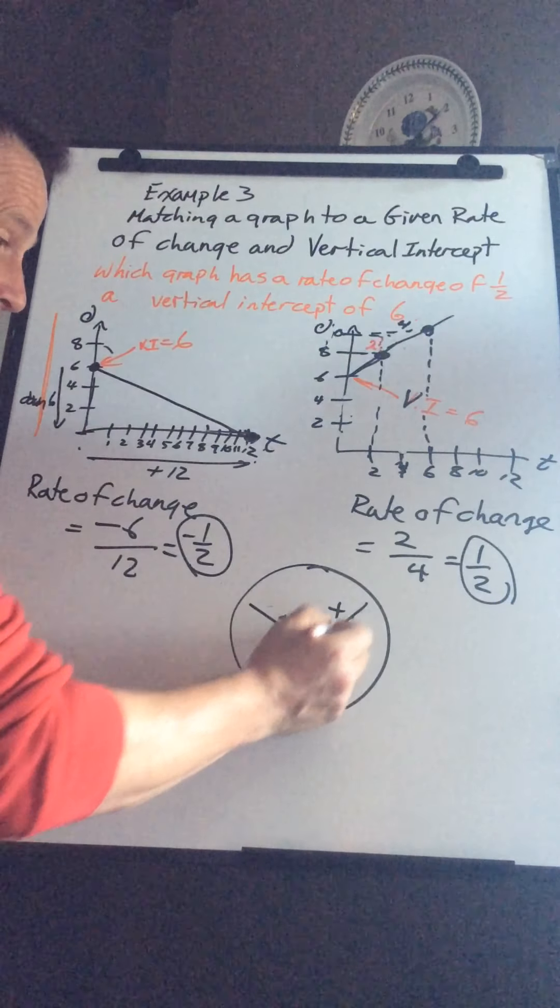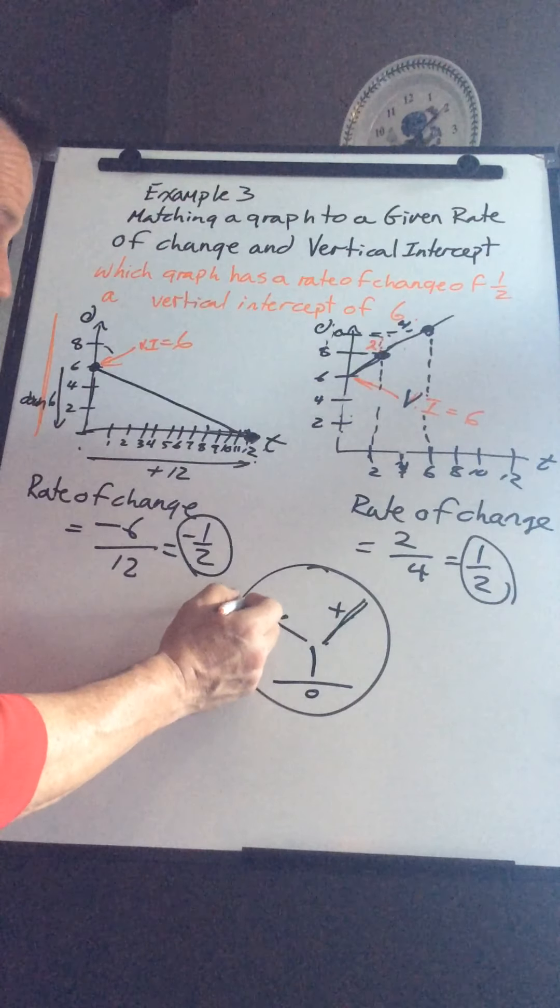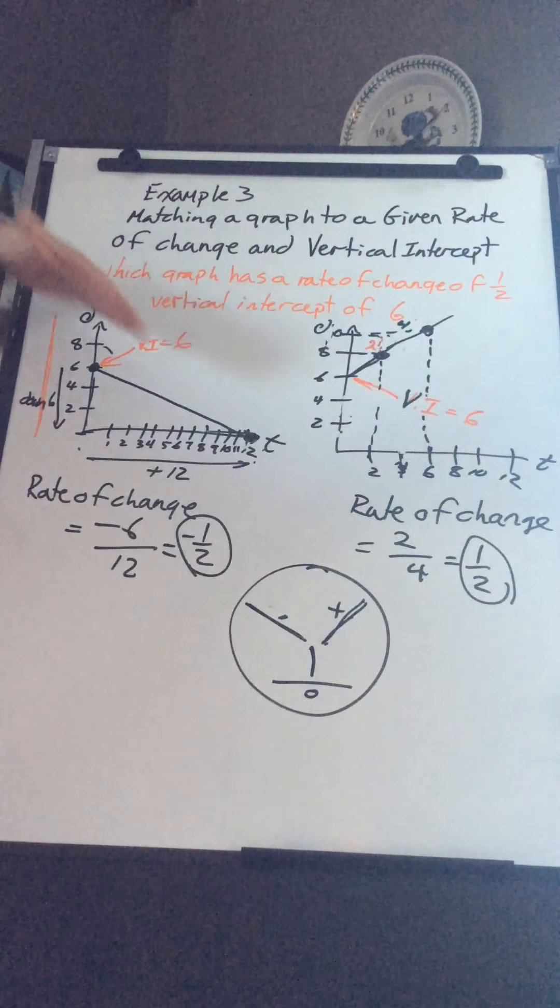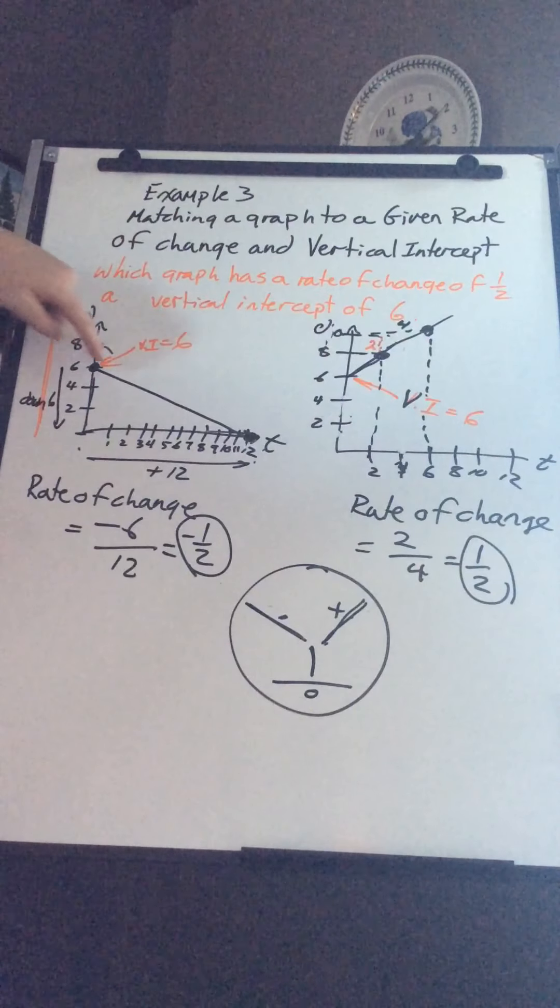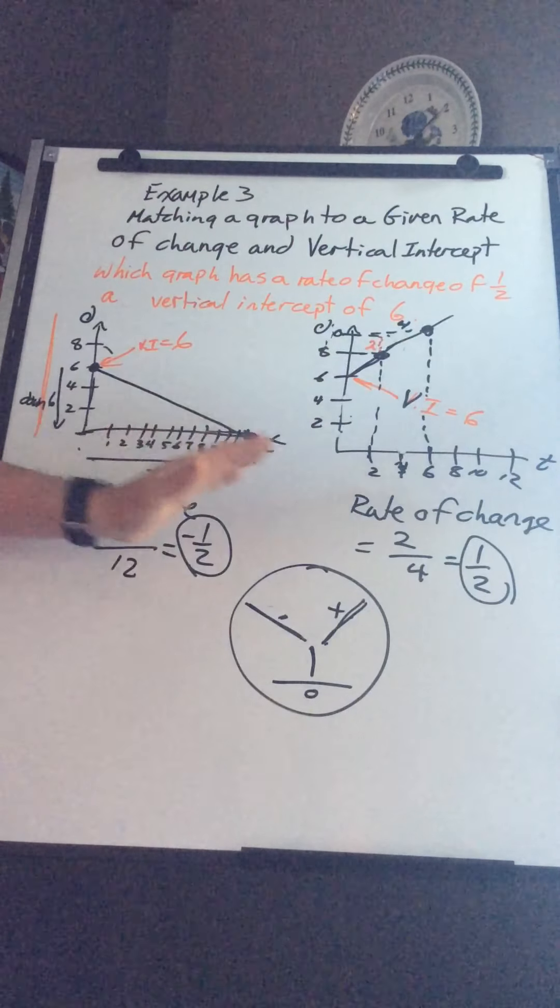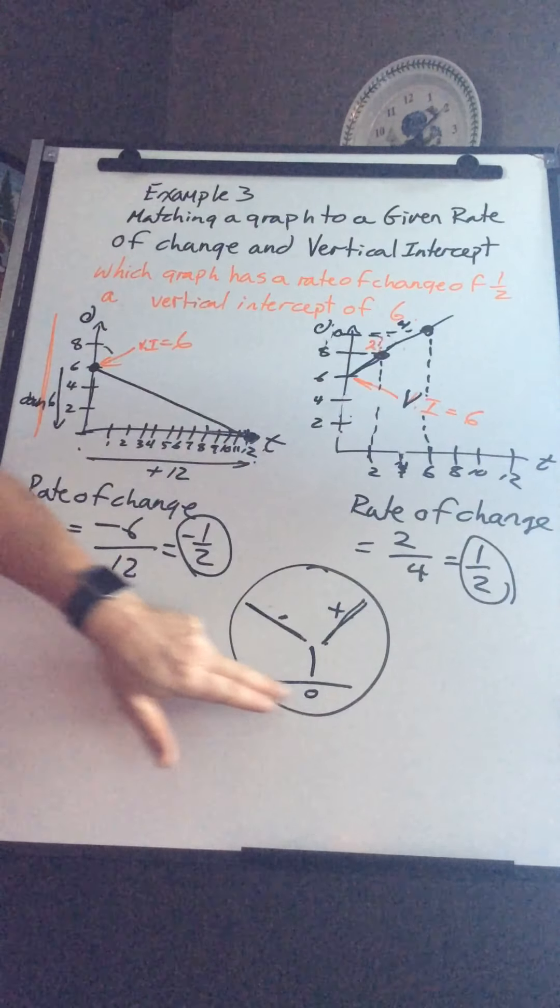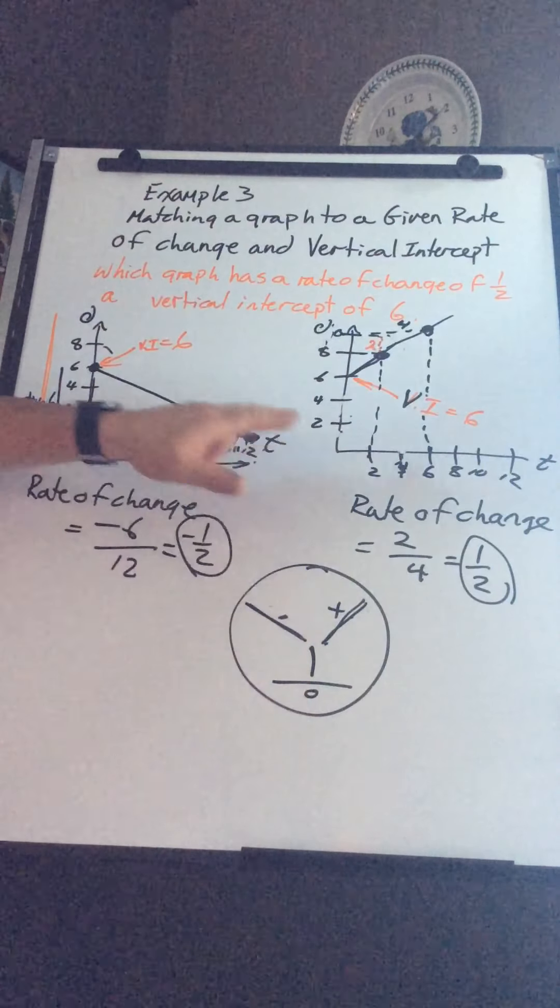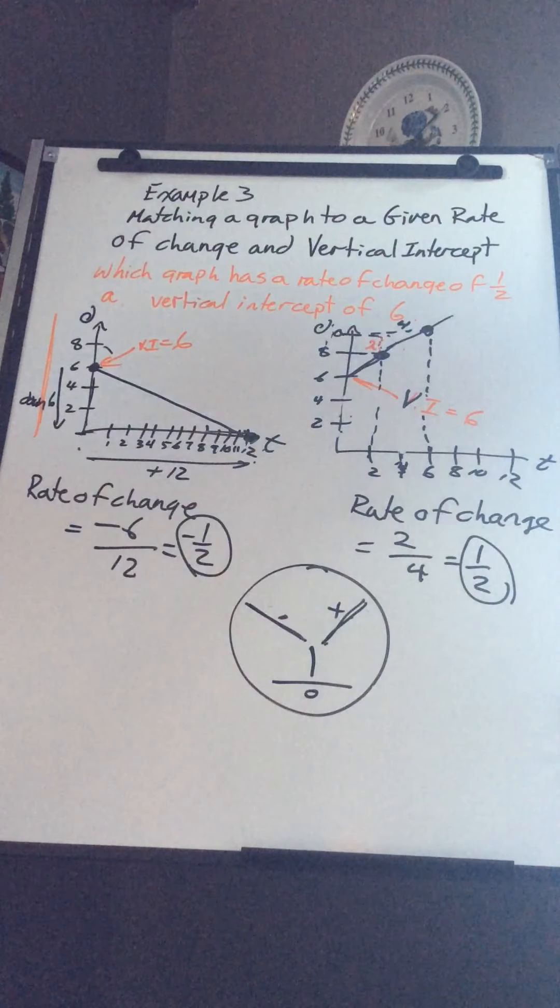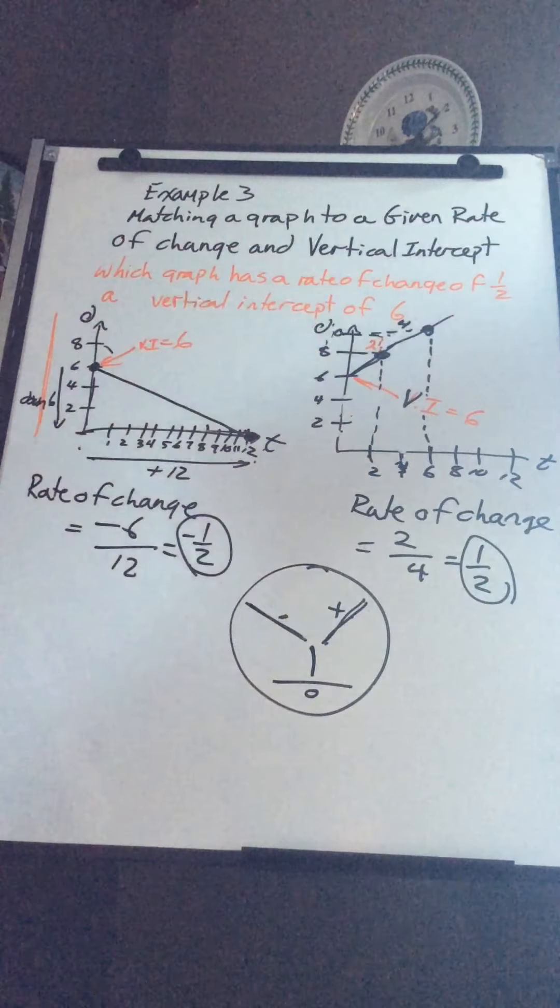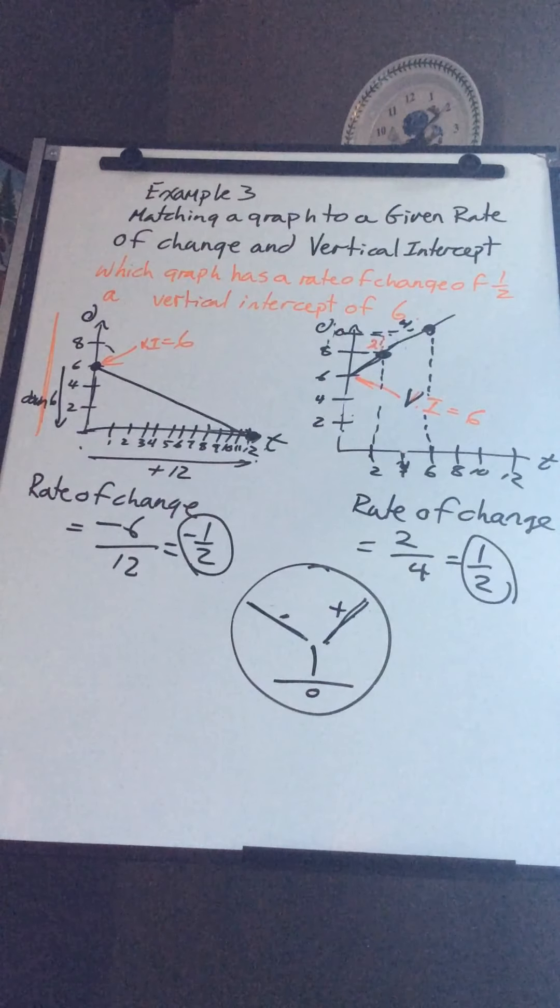So positive slope goes up this way, a positive rate of change, negative rate of change. So those are some of the things you're going to know right away. Negative because I'm decreasing as I go to the right, increasing as I go to the right, positive and positive, not doing anything, it's just a mess. We'll get more into that in a bit, but that should help with example three and some of the questions.